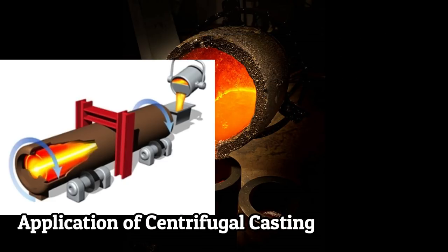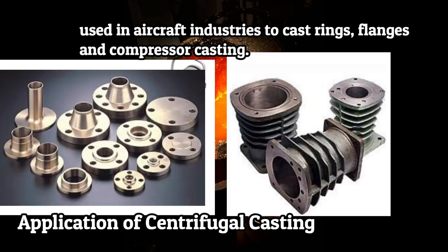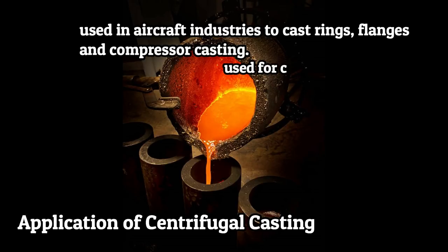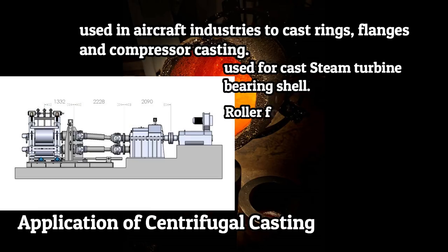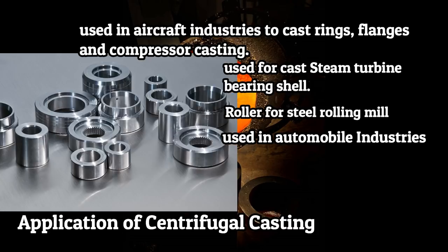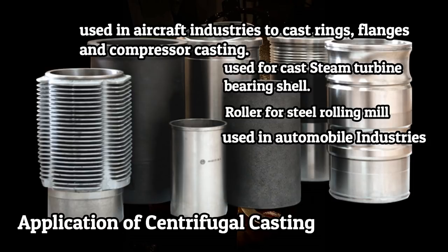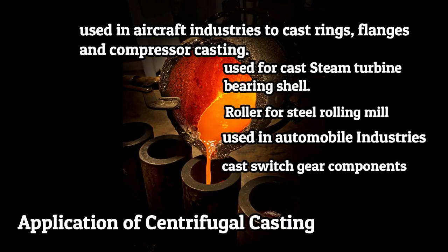Centrifugal casting is widely used in aircraft industries to cast rings, flanges, and compressor castings. It is used to cast steam turbine bearing shells. Rollers for steel rolling mills are another example. It is used in automobile industries to cast gear blanks, cylindrical liners, and piston rings. It is also used to cast bearings and switchgear components used in electronic industries.